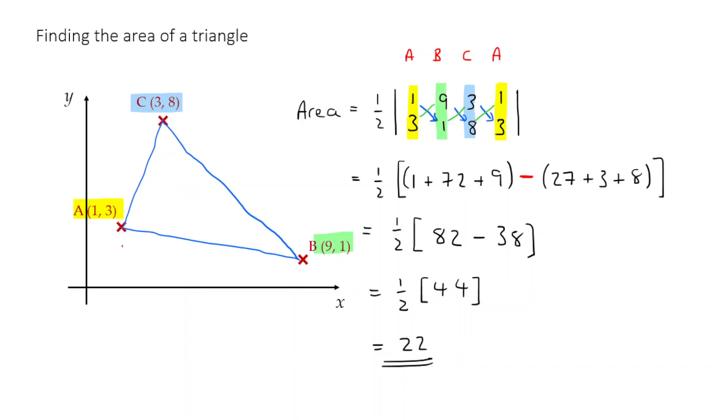Once you've done that, you take the diagonals. One and one, nine and eight, three and three. You multiply them together, and you add them up. That's what you get here. And then you do the other diagonals, three and nine, one and three, eight and one. You multiply them together, add them up, and that's what you get there. And what you do is you then subtract the one set of diagonals from the other.